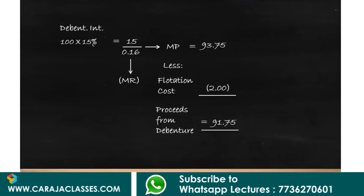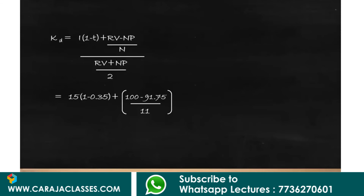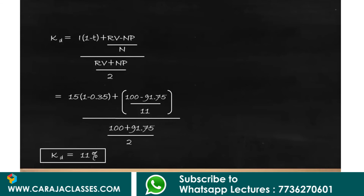Since this is a redeemable debenture, cost of debentures = [I(1-t) + (Redemption value - Net proceeds) / Life] / [(Redemption value + Net proceeds) / 2]. Fitting the values: interest is 15 multiplied by post-tax effect, plus (100 - 91.75) divided by 11 years, divided by the average of 100 and 91.75. Cost of debenture works out to 11 percent.